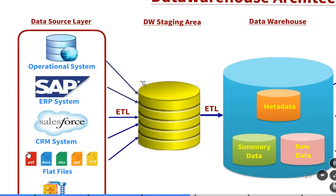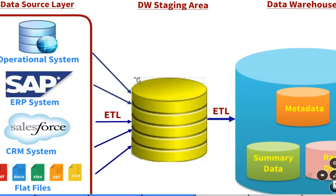The data is extracted from the data source layer into a staging area using ETL tools. ETL stands for Extract, Transform, and Load. The first step is to extract the data from various data sources into a single staging area using ETL tools. Having one common area for all the sources makes it easier for subsequent data processing and data transformation.